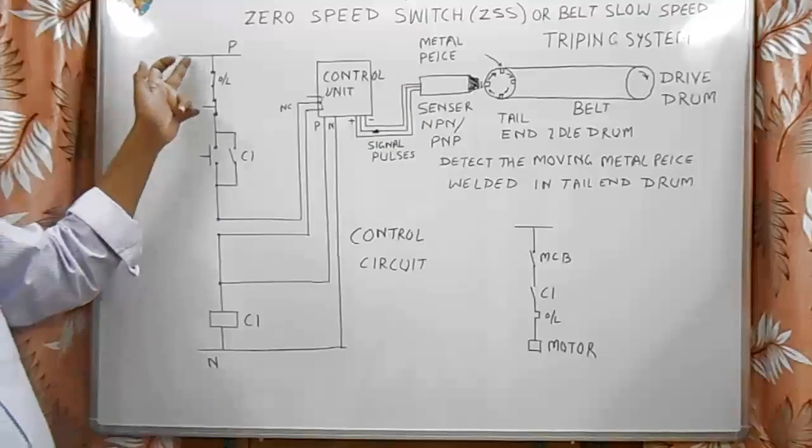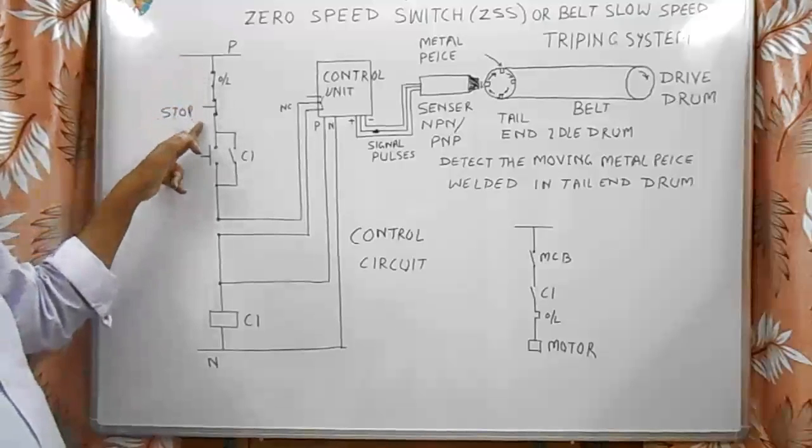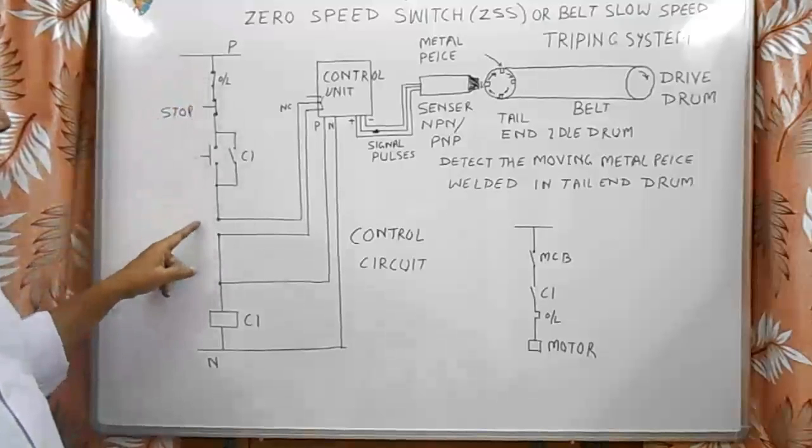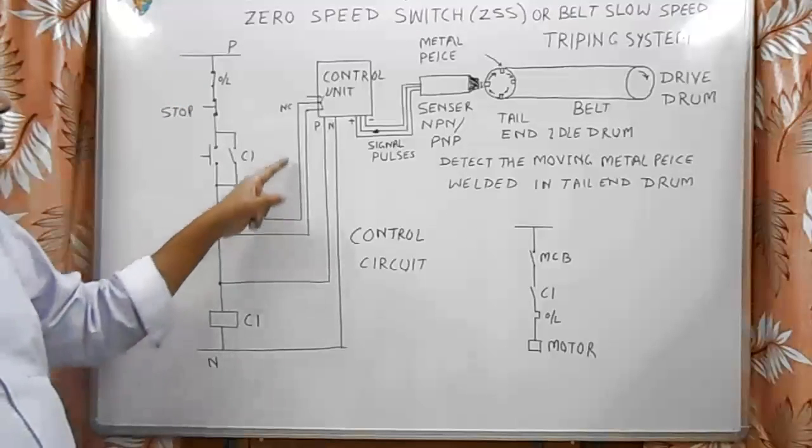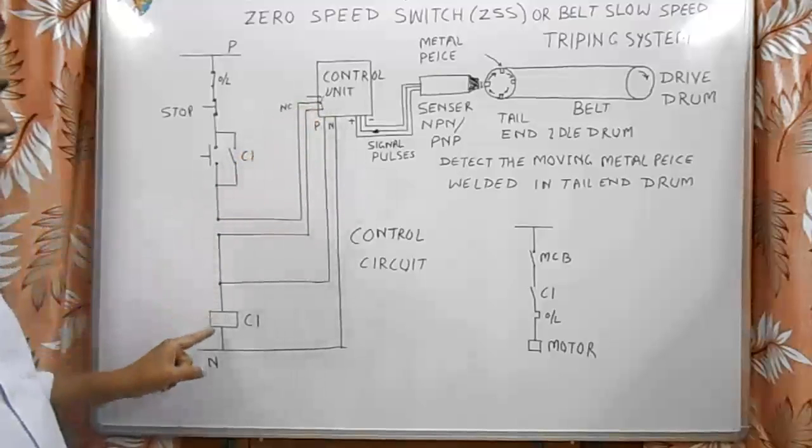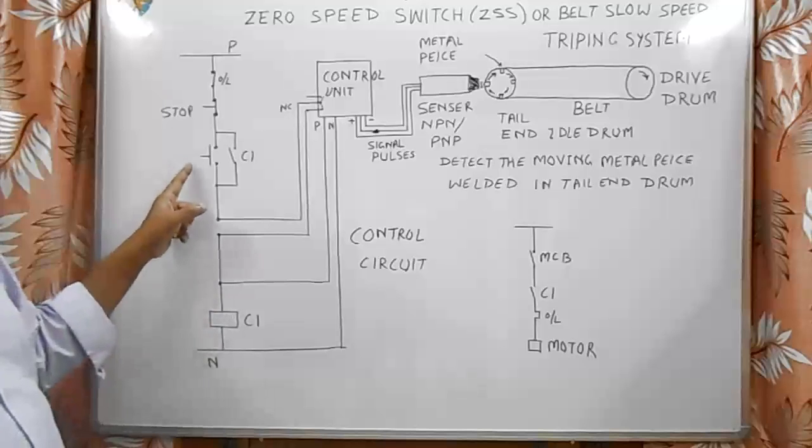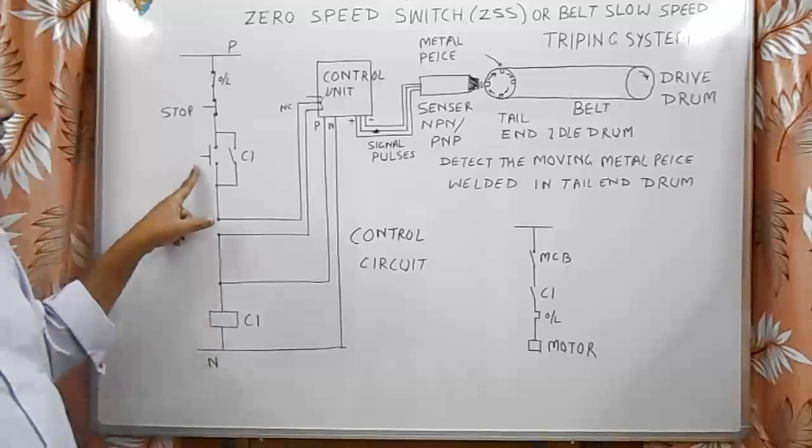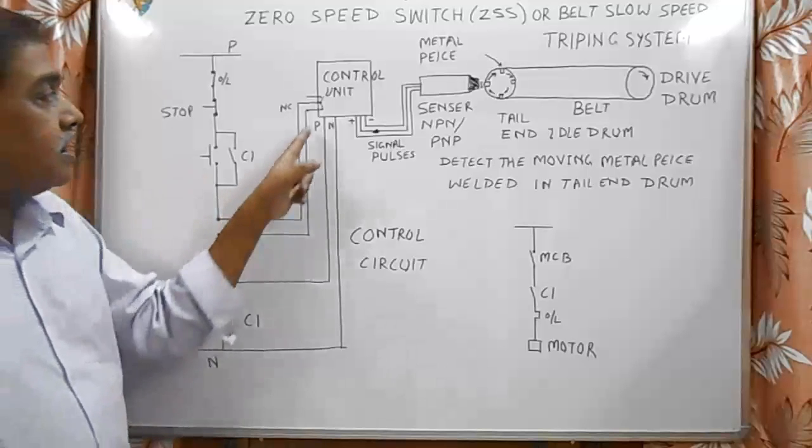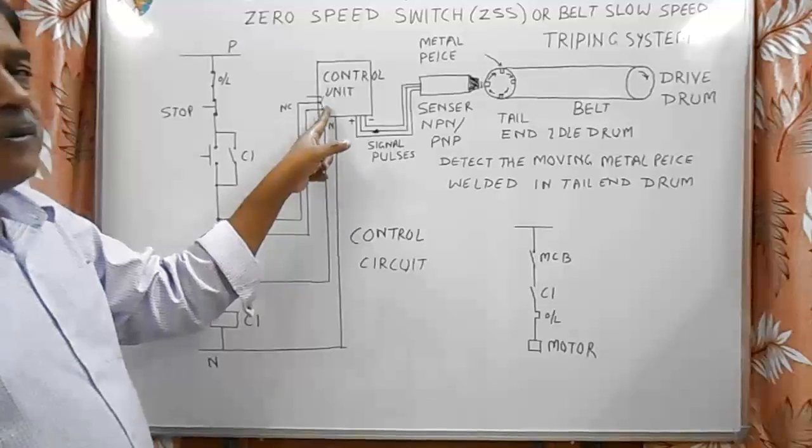In the control circuit, phase R goes to one terminal, then from the stop button, then start button, and from there to this interlocking contact of the control unit. From there it returns back to the C1 contactor coil. When we press the start button, this contactor picks up and C1 closes. This contact remains closed till 15 seconds till the belt picks up speed.